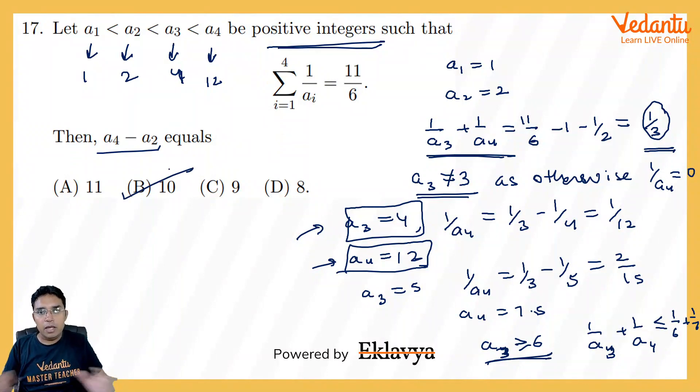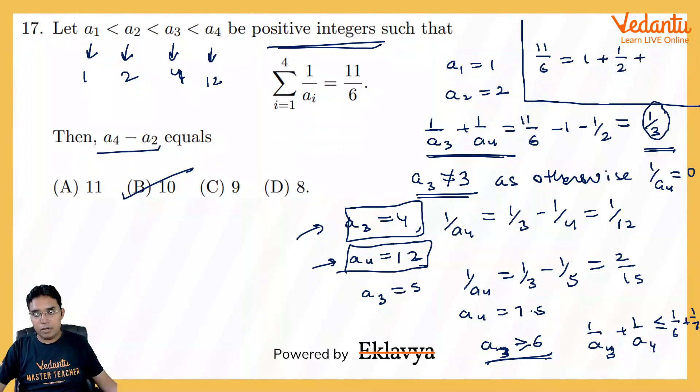Little tricky question, but let me give you one objective method also. Please see how. Can you see that 11 by 6 is 1 plus 5 by 6, which I can write as 1 by 1 plus 1 by 2, 1 by 3, and 1 by 12, I think. By doing some hit and trial, it can be seen that 11 by 6 is equal to 1 plus 5 by 6. 5 by 6 further can be broken down into 1 by 2 plus 1 by 3 plus 1 by 12.